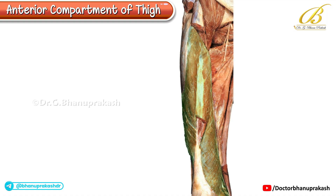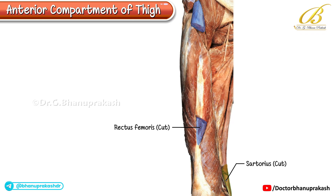In this image, the rectus femoris and sartorius have been cut and removed to expose the deeper structures. The cut ends of these muscles are visible. Here is the proximal cut end of the rectus femoris, and here is its distal cut end. Similarly, distal cut ends of the sartorius can also be seen. Laterally, the cut ends of the tensor fasciae latae are also identified.